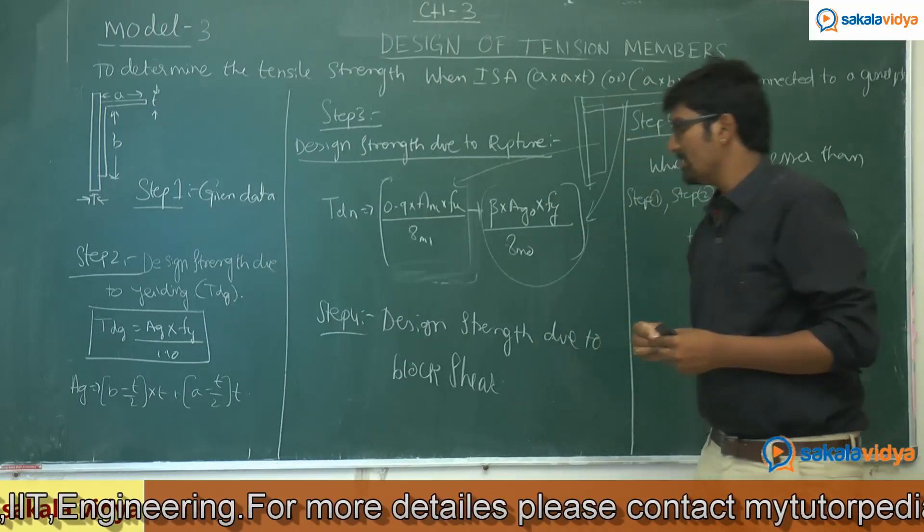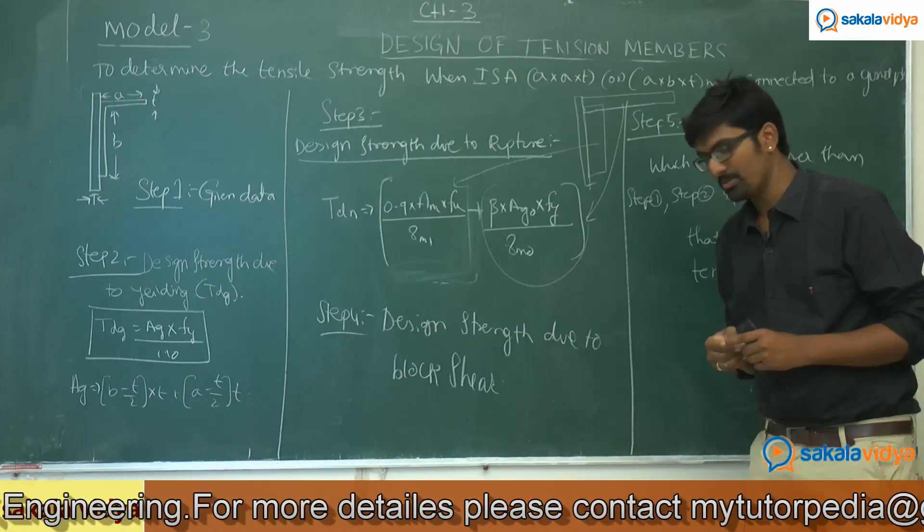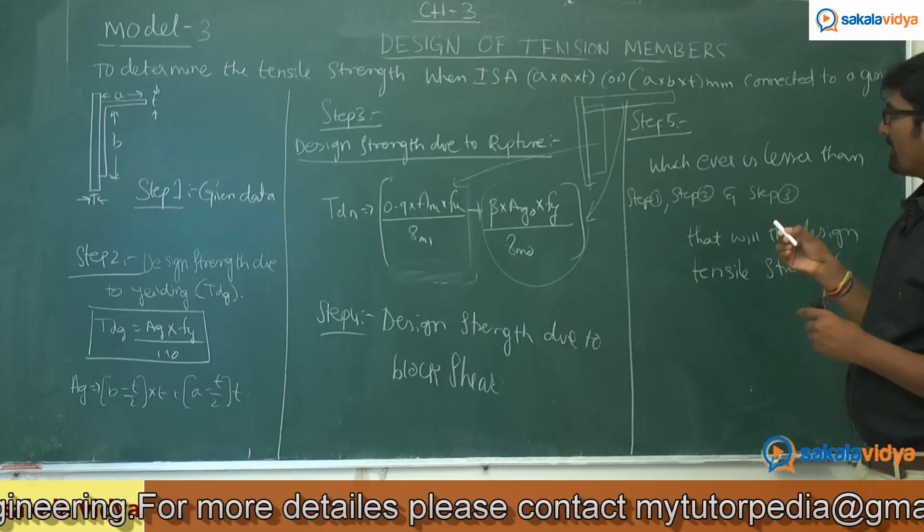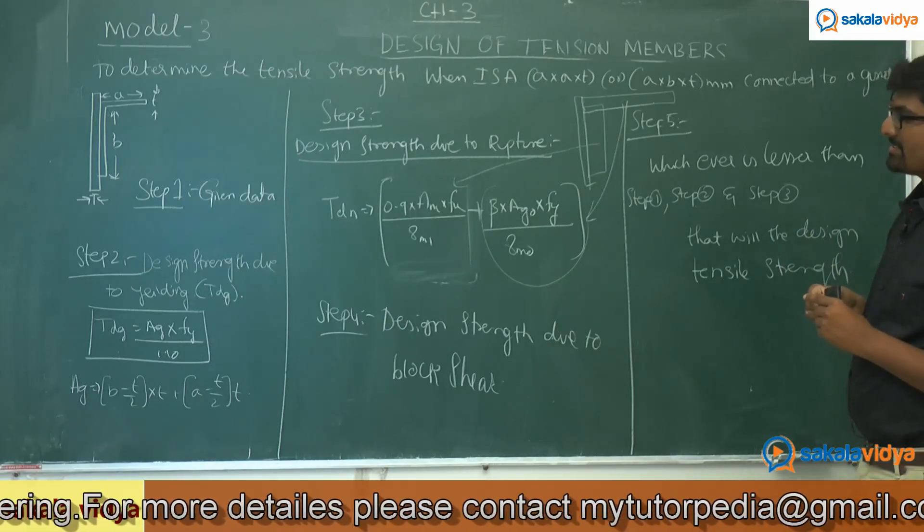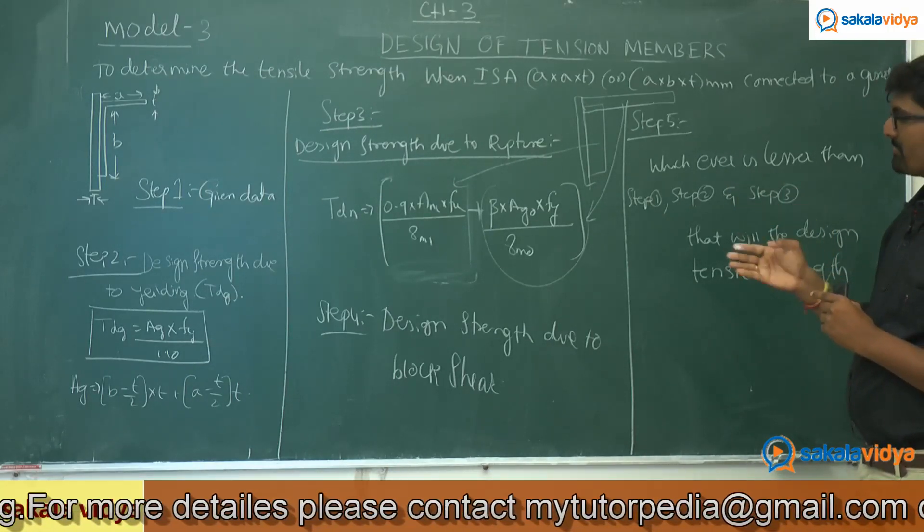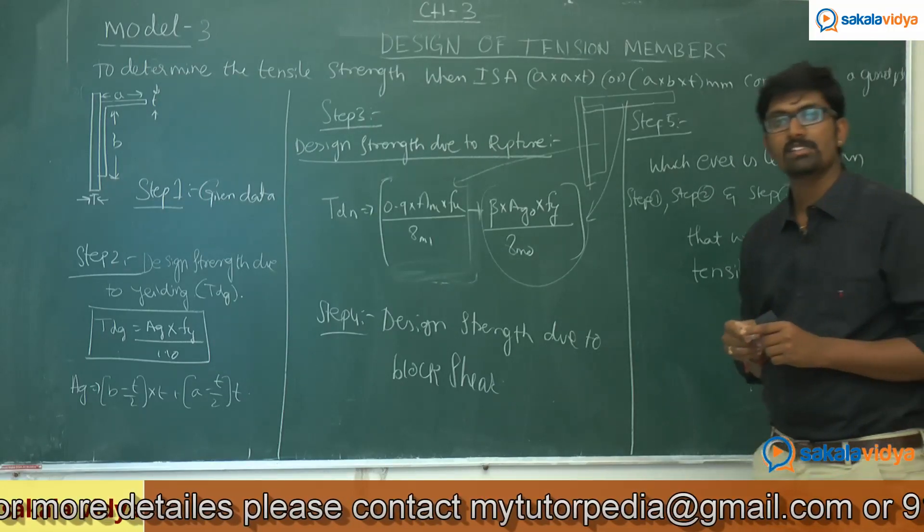Step 4, design strength due to block shear. Step 5, the last step is whichever is lesser from step 2, step 3, step 4, that will be the design tensile strength of the plate.